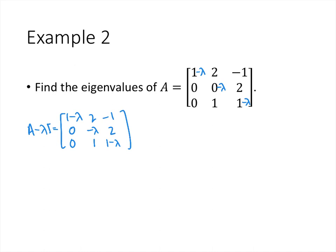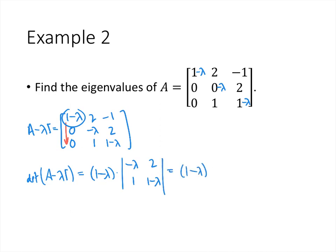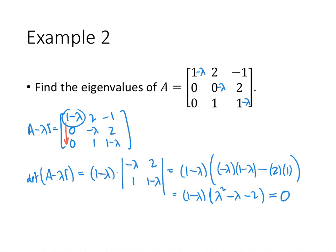We'll expand down the first column because it has two zeros. Using the 3 by 3 determinant technique, the determinant of A minus lambda I equals (1 minus lambda) times the 2 by 2 determinant [negative lambda, 2; 1, 1 minus lambda], which equals (1 minus lambda)(negative lambda times (1 minus lambda) minus 2). Inside the parentheses we get lambda squared minus lambda minus 2. The goal is to keep things factored, so we factor lambda squared minus lambda minus 2 as (lambda minus 2)(lambda plus 1).